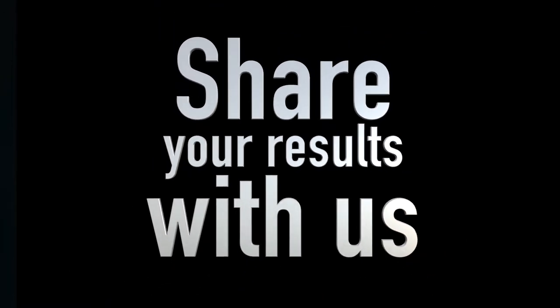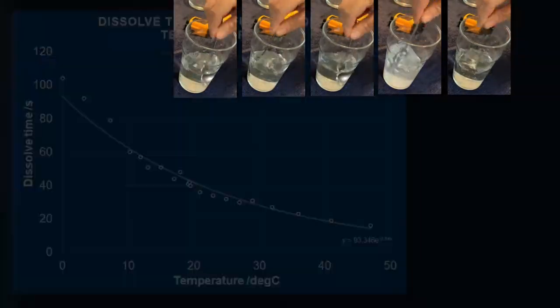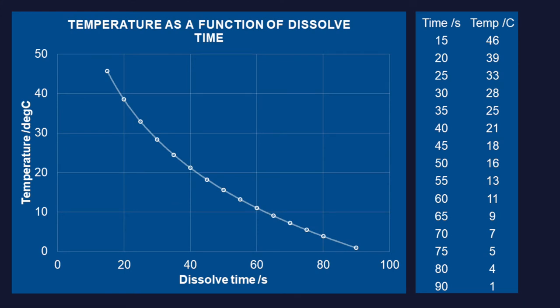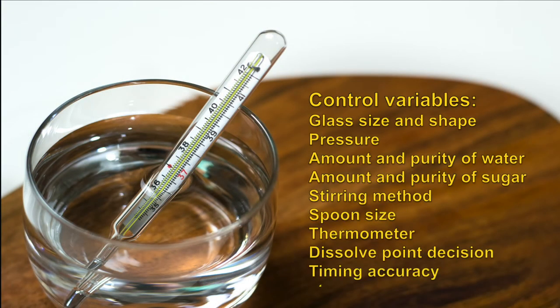Please share your results with us using the web page form. If you have thermometer readings, share those too. It doesn't matter if you don't. We did this experiment many times, used maths to get a nice smooth curve, and swapped the axes to make it easier for you to see what temperature your stir times would indicate according to our measurements. Don't be surprised if your results differ from ours. It'll likely be because the control variables differ. Here are some of these. Please tell us if you can think of some more.